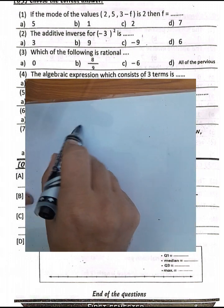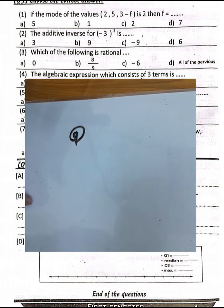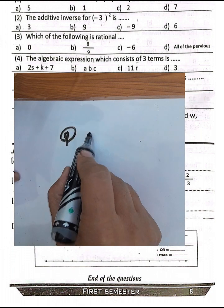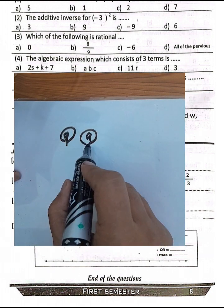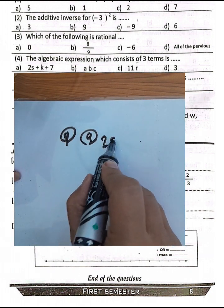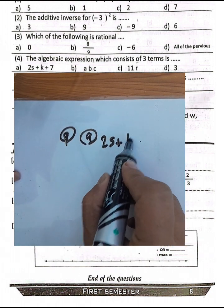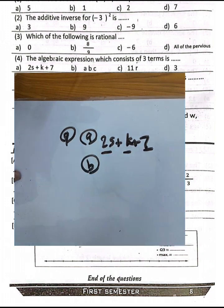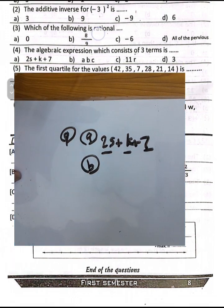MCQ question number 4: the algebraic expression consisting of three terms is 2s plus k plus 7 — it has three terms. Choose letter A.